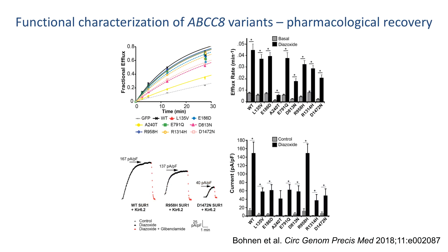SUR1 and K-ATP loss of function could result from various mechanisms, but any channel activity present might be augmented by selective potassium channel opening drugs such as diazoxide. Consistent with this suggestion, all mutants tested were pharmacologically activated by diazoxide in rubidium efflux, as shown in the top panels, and whole cell patch clamp, as shown in the bottom panels. In other words, all mutants showed pharmacological recovery of function.